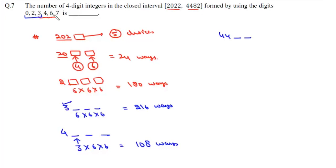Now, what about numbers starting with 44? The number should be less than 82. All these digits are less than 8, so here we have six choices and here also we have six choices, so there will be a total of 36 ways.